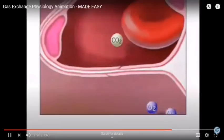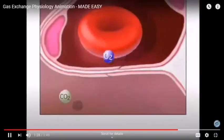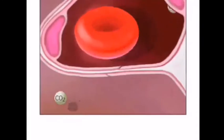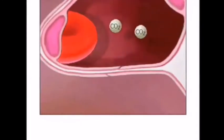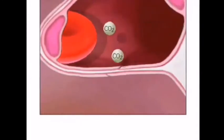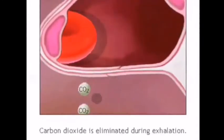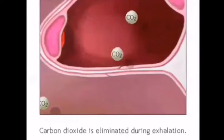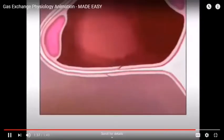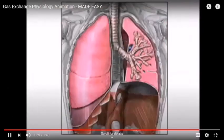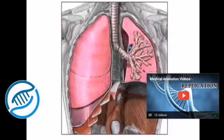Oxygen molecules attach to red blood cells, which travel back to the heart. At the same time, the carbon dioxide molecules in the alveoli are blown out of the body with the next exhalation. Gas exchange allows the body to replenish its oxygen.